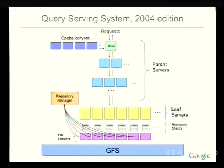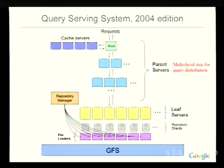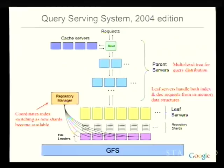We caught our breath a bit and then redesigned things a fair amount in 2004 — the first time we were able to rethink things from scratch. We unified the index servers and doc servers. We now have a multi-level tree for query distribution, generalized from what we had before. We have leaf servers able to handle both index and doc requests. A repository manager sits on the side — the index is made up of thousands of shards, and as a new shard becomes available we'll just switch that one shard, so an index switch is now a very gradual process happening all the time rather than a big monolithic event.